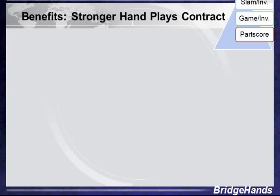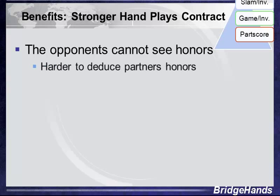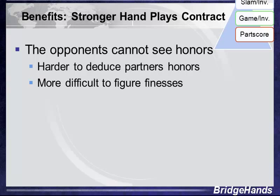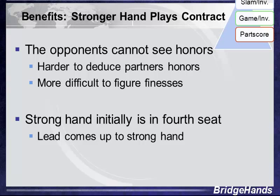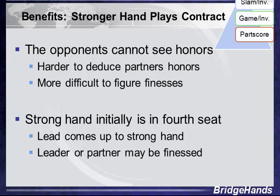Why have partner bid your suit rather than bidding it yourself? First, the opponents cannot see the honors of the stronger hand — the one no trump opener — making it harder to deduce their holdings and guess finesses. Second, when the stronger hand is in the fourth seat, the lead comes up to that strong hand, and the leader or leader's partner may be finessed, potentially costing them a trick.